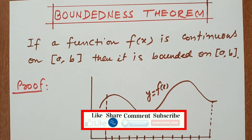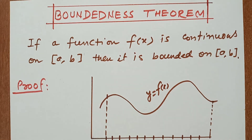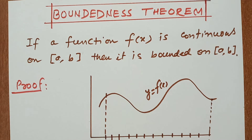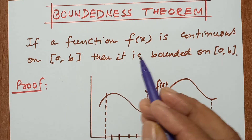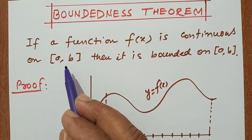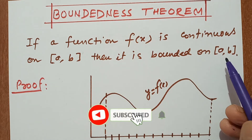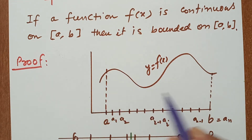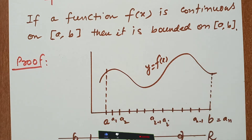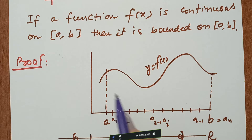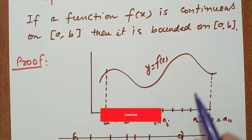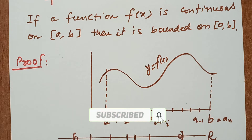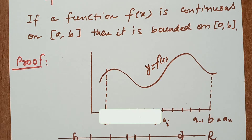Now I am going to explain the very important boundedness theorem. So what is the boundedness theorem? It is a theorem on continuous functions: if a function f is continuous on a closed interval [a,b], then it is bounded on [a,b]. Let us suppose y = f(x) is a continuous function on closed interval [a,b] — then it is clearly bounded. Now I am going to prove this very important boundedness theorem.